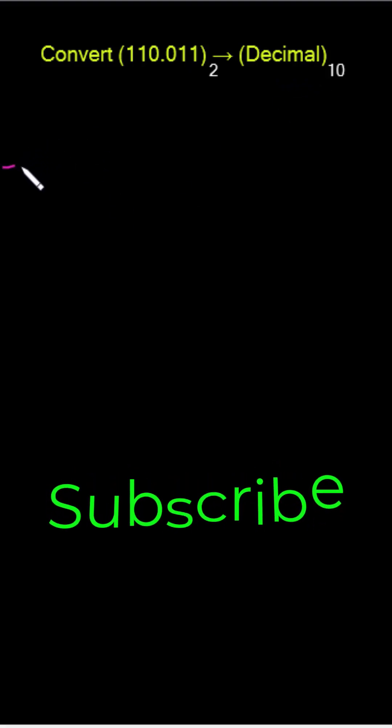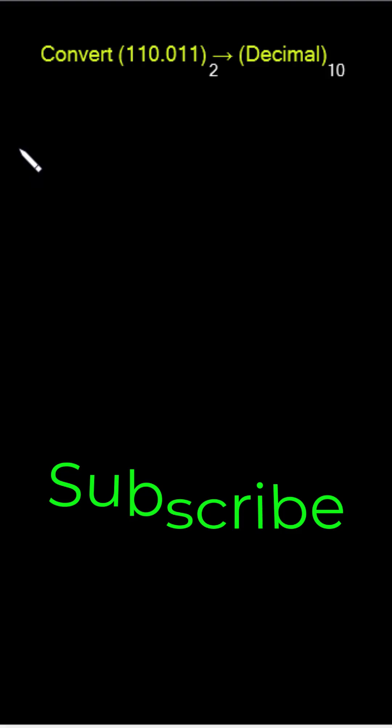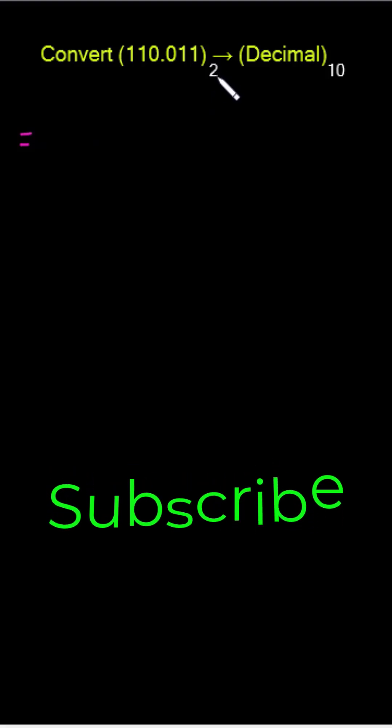We have been asked to convert (110.011)₂ to its equivalent decimal. In order to do so, remember that regardless of the base—whether binary, octal, or whatever the base may be—we have only two. All you need is to multiply each one of these digits or coefficients with its base.